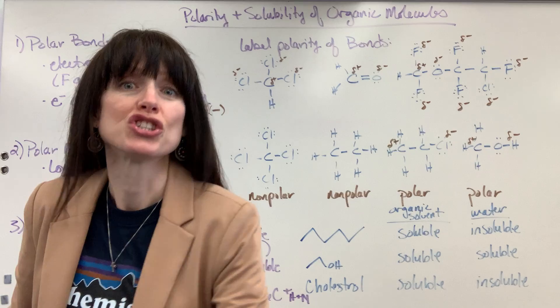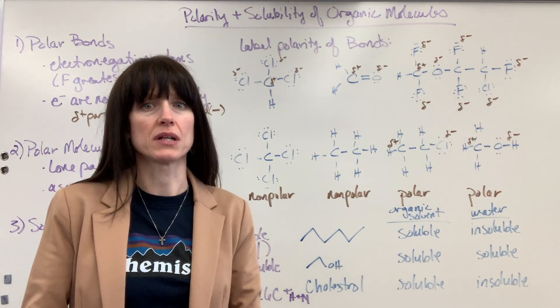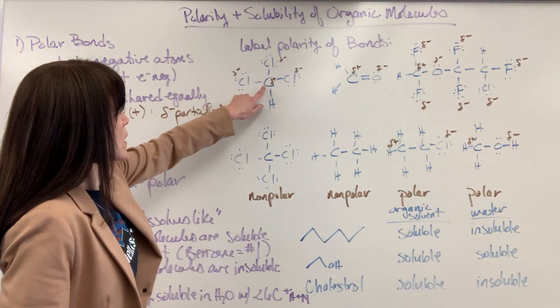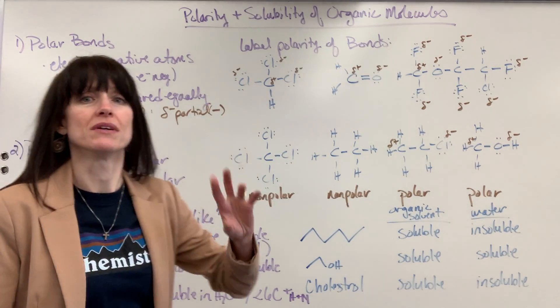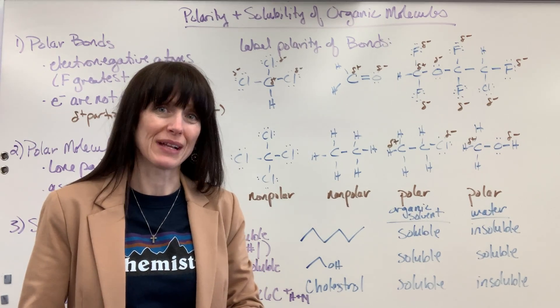So a little bit of practice just labeling bonds. Sometimes you'll see questions that they just want the polarity of bonds. Carbon with chlorine is going to be a very polar bond because chlorine is so electronegative.